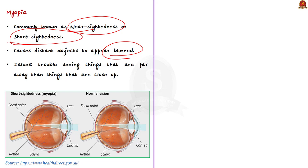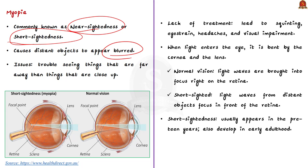Now let us discuss the symptoms of myopia. Myopia causes distant objects to appear blurred — this is the first symptom. It also causes squinting of the eyes, and because of the squinting, a person will also experience eye strain. It will cause headaches. In the long run, it can also cause significant visual impairment. So in order to avoid visual impairment in the long run, treatment of myopia is essential.